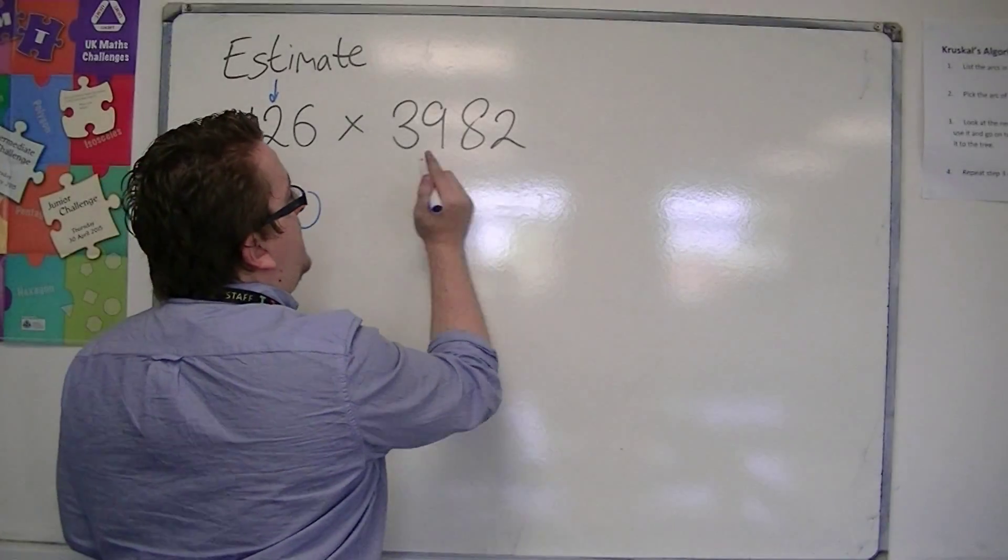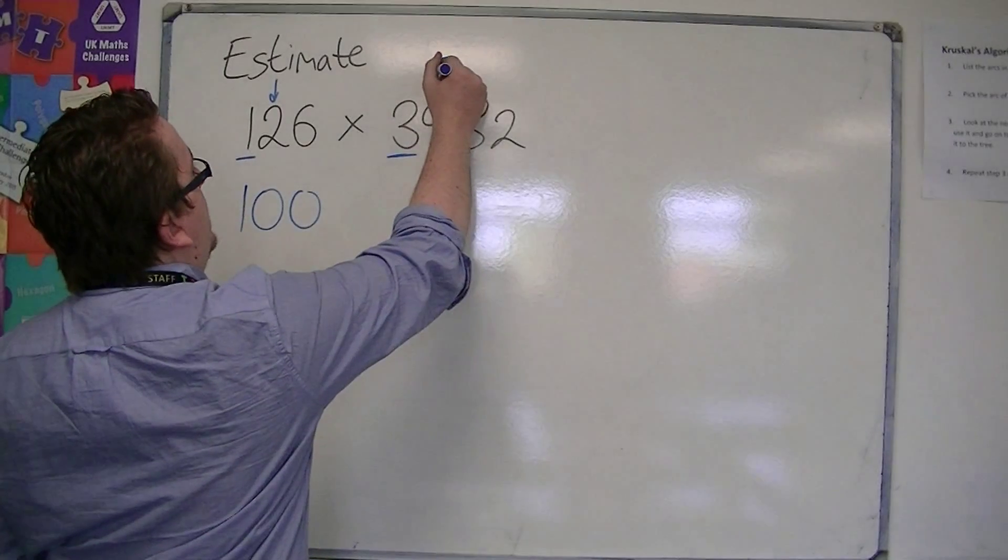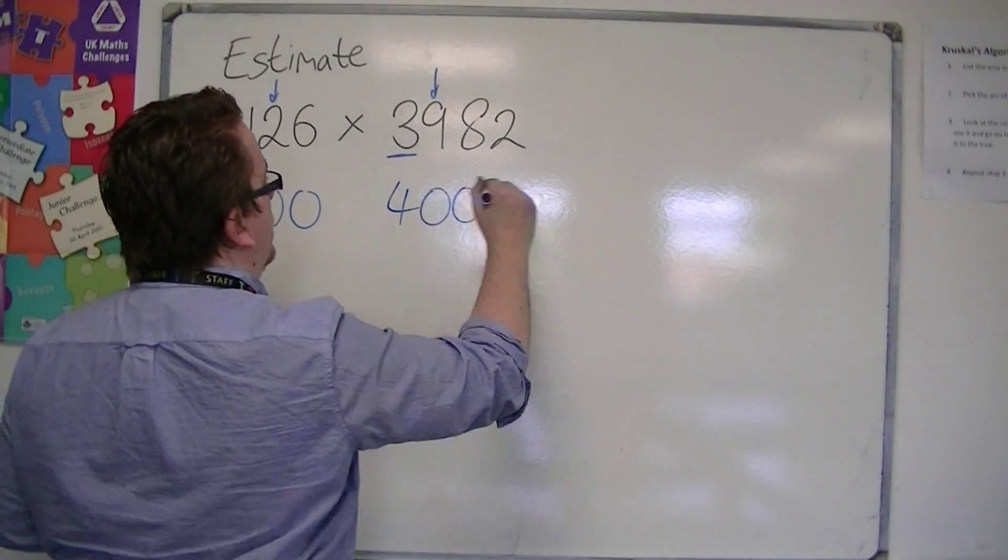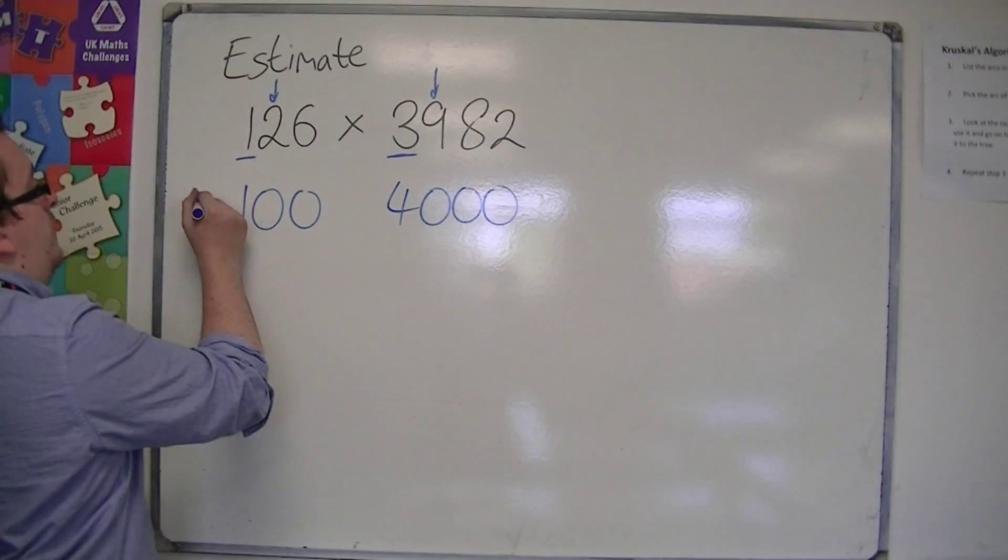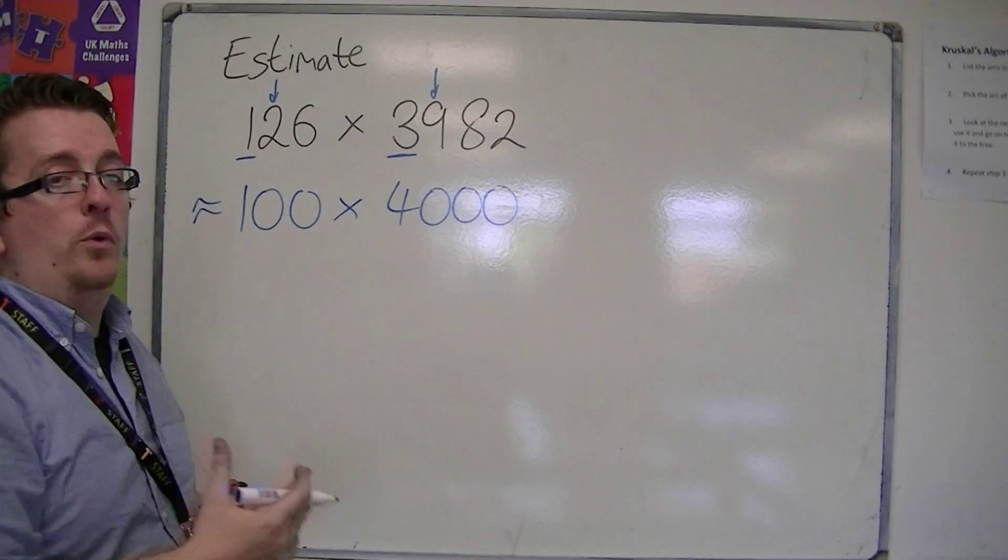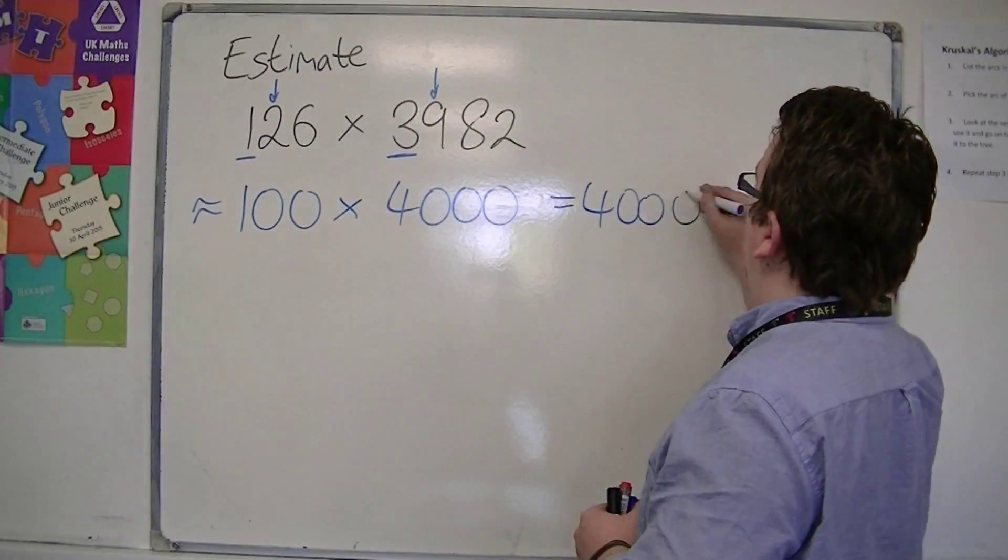And 3,982, the first significant figure, one to the right tells me to round up, so it would be to 4,000. So I'm saying that this is going to be approximately equal to 100 times 4,000, which is 400,000.